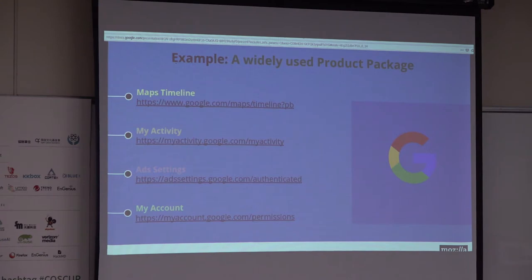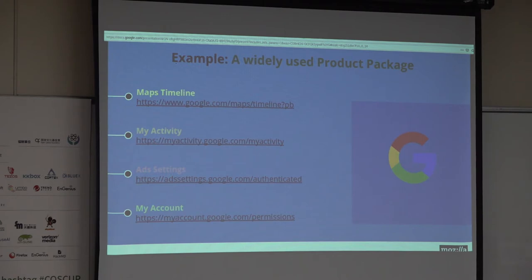Taking a small example of Google — everybody uses Google. If you go to any of these links, you will get your personal data that Google wants you to know. They are collecting a lot of data but showing you some of it — for example, maps, your activity, your ad settings, and your account. You can go to all these URLs and get personalized data collection points. All that data is there for you to see. You can even ask Google to delete it if you are under any GDPR European nations.